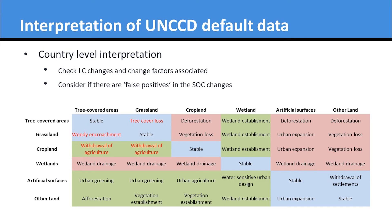For country-level interpretation of the default SOC data, it is important to look at the land cover changes and the change factors associated with the soil organic carbon and the land cover matrix. One thing to look for is false positives in SOC changes. For example, soil organic carbon may be considered not to change in a transition from grassland to tree-covered areas; however, this may involve woody encroachment onto grazing lands — a sign of losing agricultural productivity. These kinds of details can only be considered and interpreted at a country level.